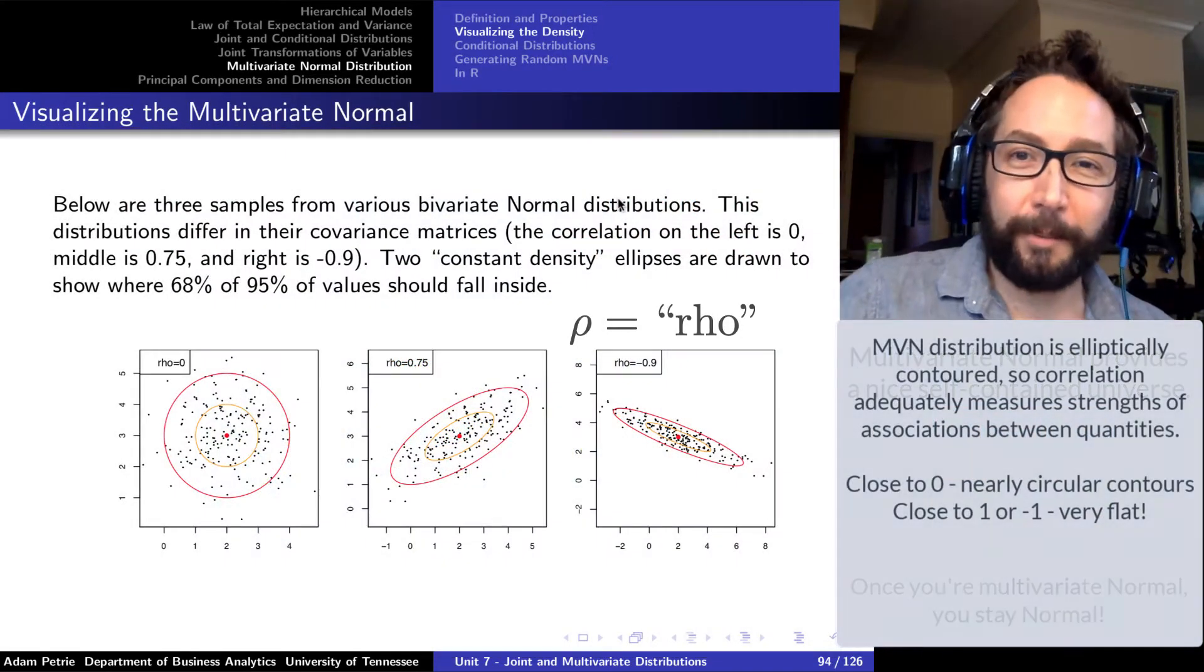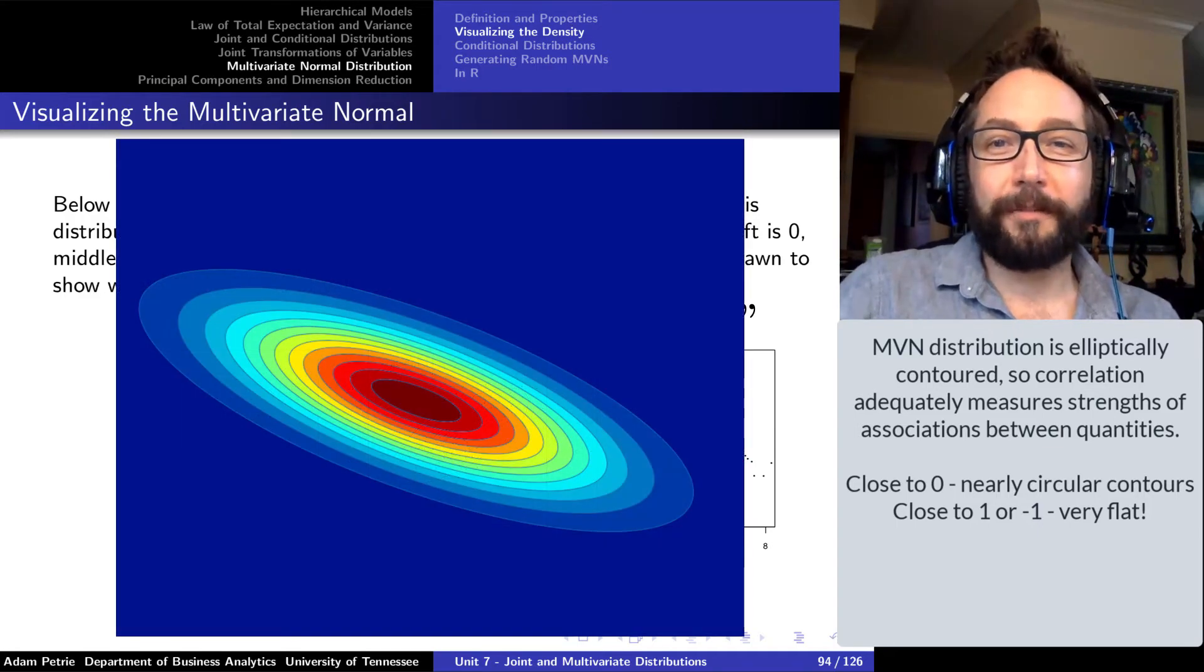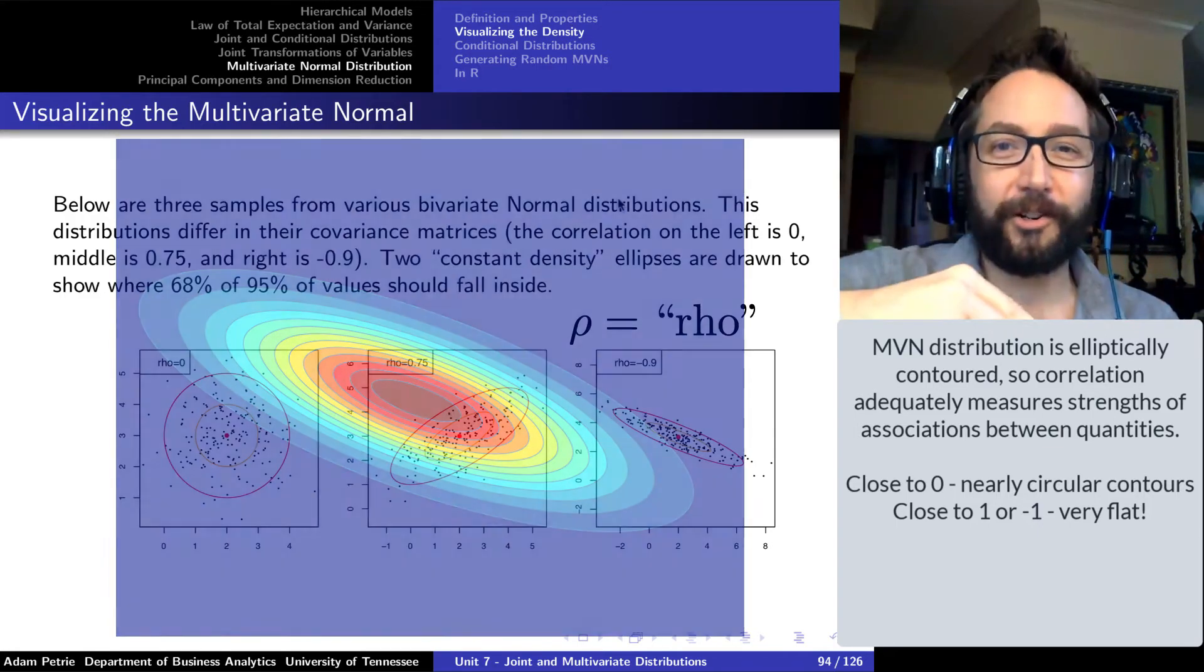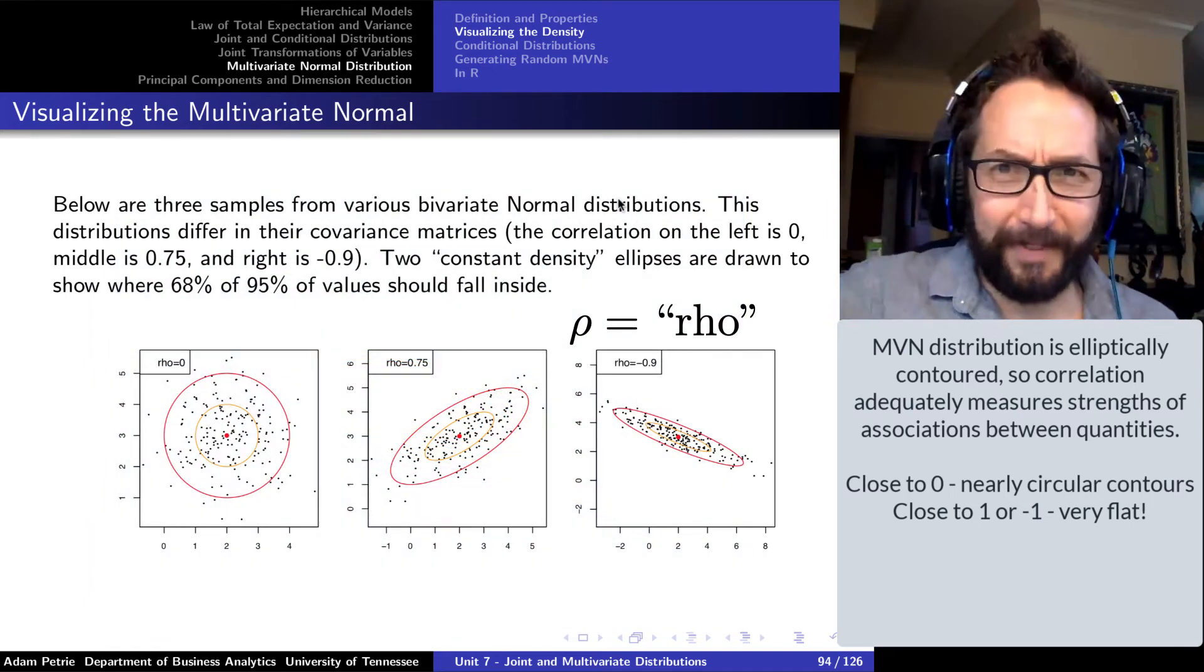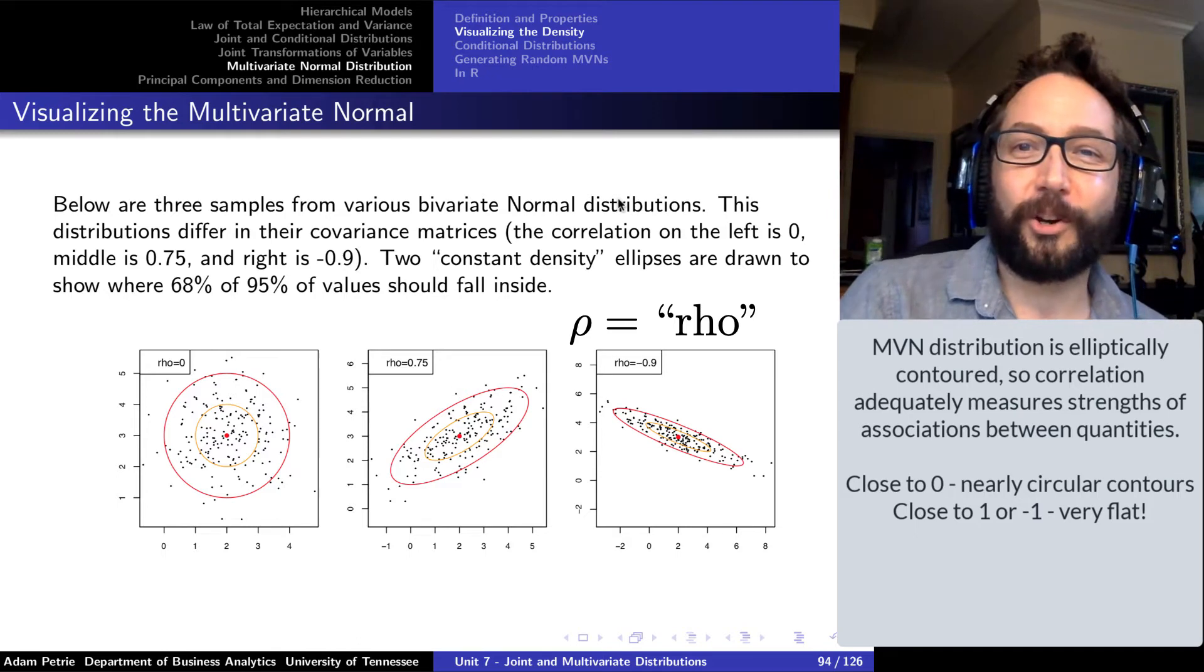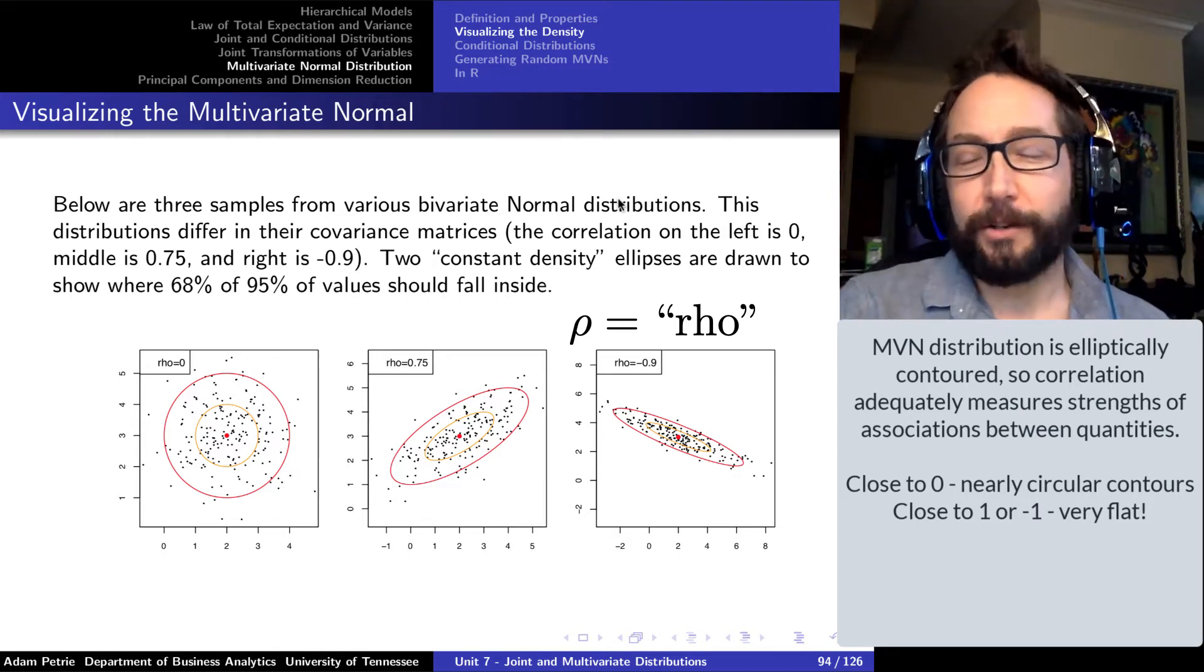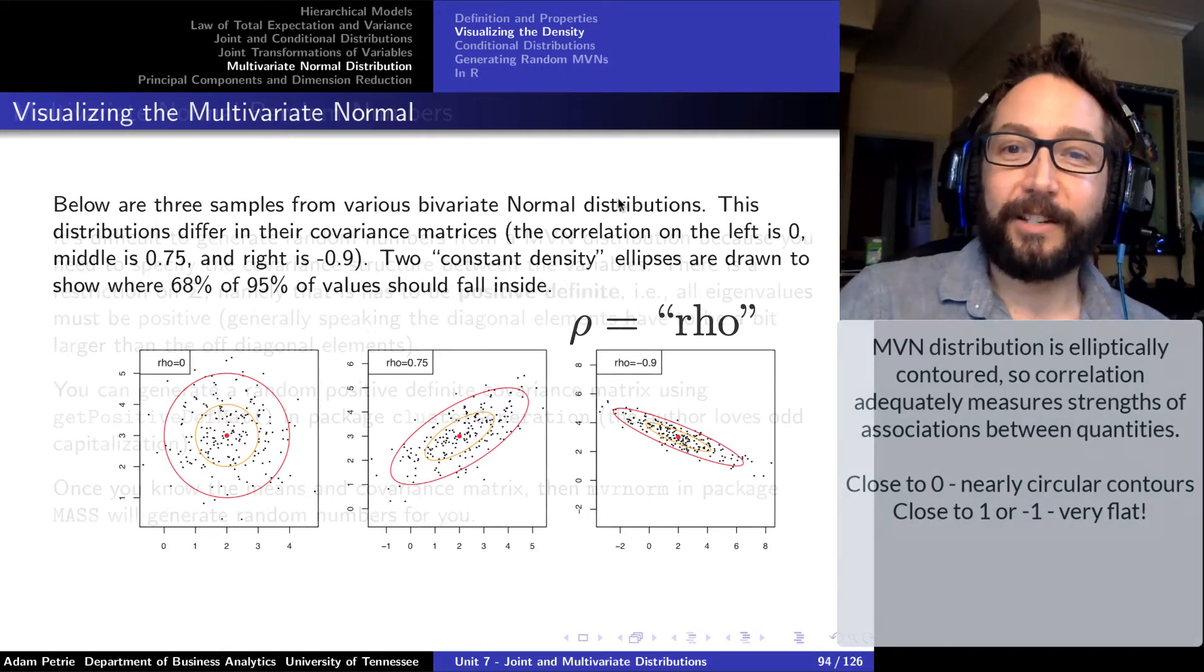So all of the multivariate normal distributions look kind of the same. There's some sort of flattened ellipse, maybe spherical, maybe more cigar shaped in two, three, four, five dimensions. They're all elliptically contoured. And so using that correlation to describe the strength of the relationships between those random quantities is a valid thing to do.